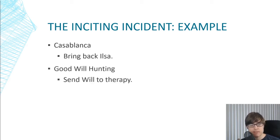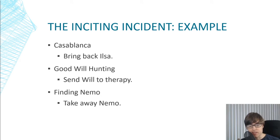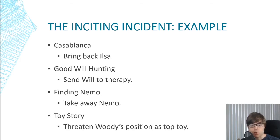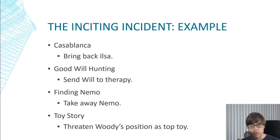In Casablanca, Ilsa comes back to Rick — that ghost from the past. He has emotional damage from being rejected in Paris, and Ilsa is the physical embodiment of that event. So the way we start his character arc is by bringing back that ghost and forcing him to confront it. Similarly in Good Will Hunting, Will needs to undergo therapy to defer prosecution as part of an agreement, which forces him to confront his ghost experiences and the pain from his past. In Finding Nemo, we take away the thing Marlin loves most: Nemo. In Toy Story, we threaten Woody's position as top toy by bringing in Buzz. These inciting incidents are the first major events that kick off the story's chain of cause and effect.